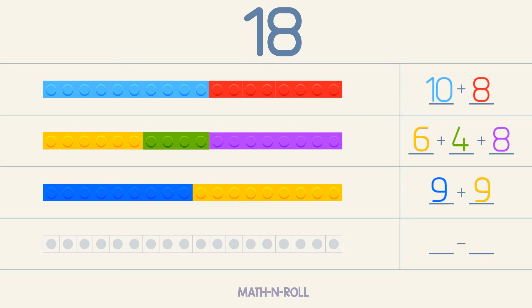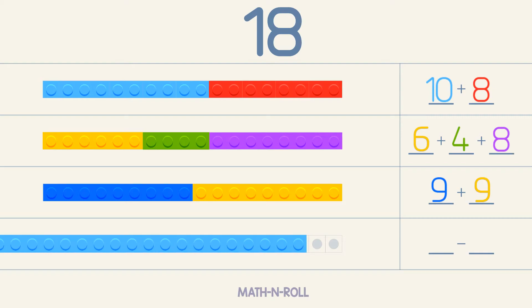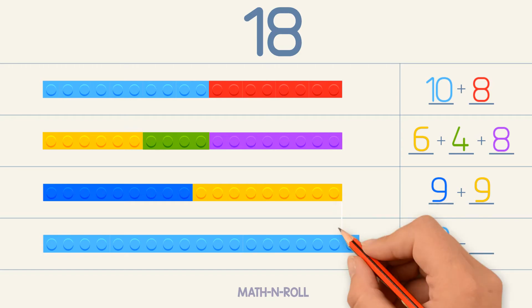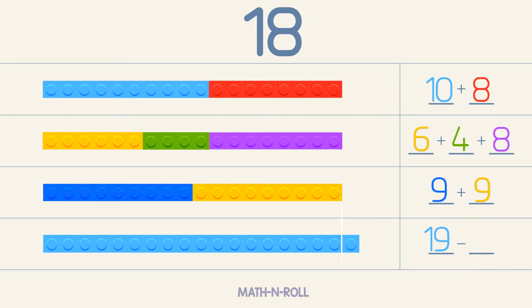We can also subtract to make 18. Let's pick any number greater than 18, for example 19. To make 18, we have to remove one piece. So 19 minus 1 equals 18.